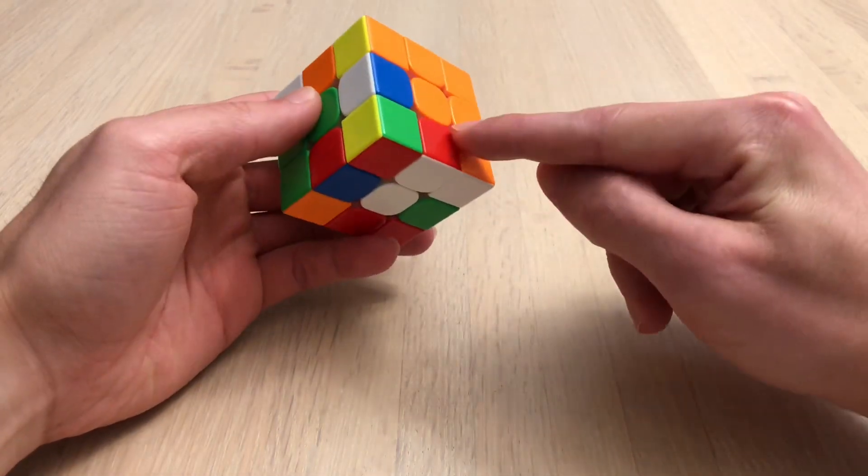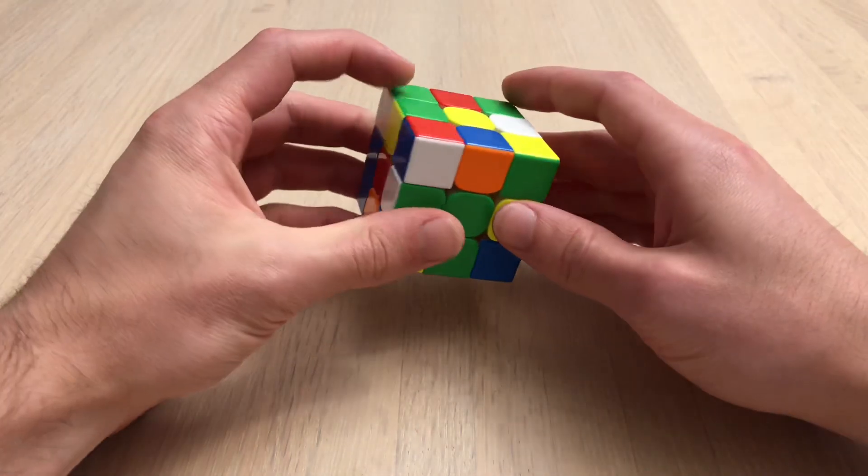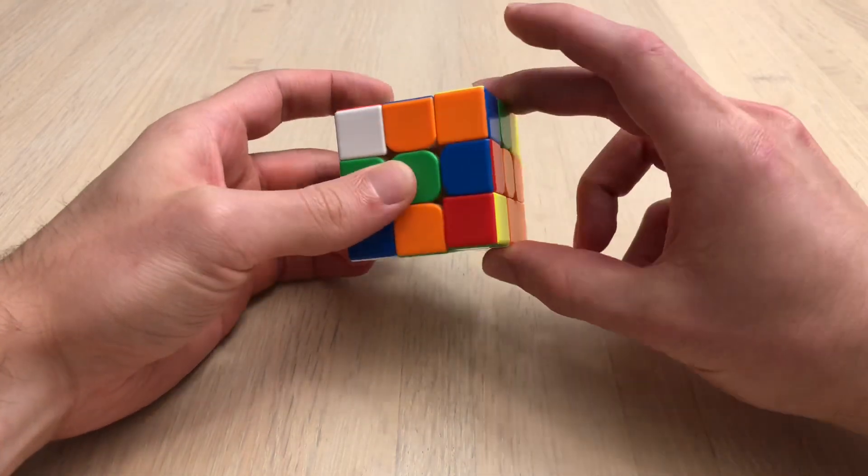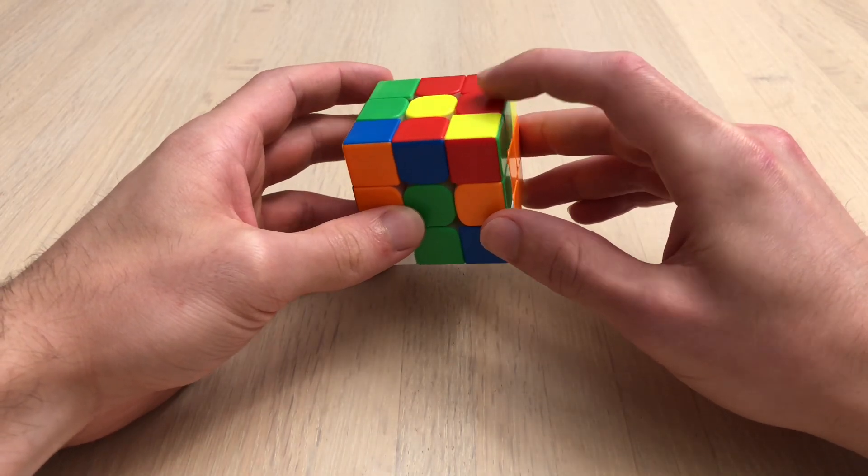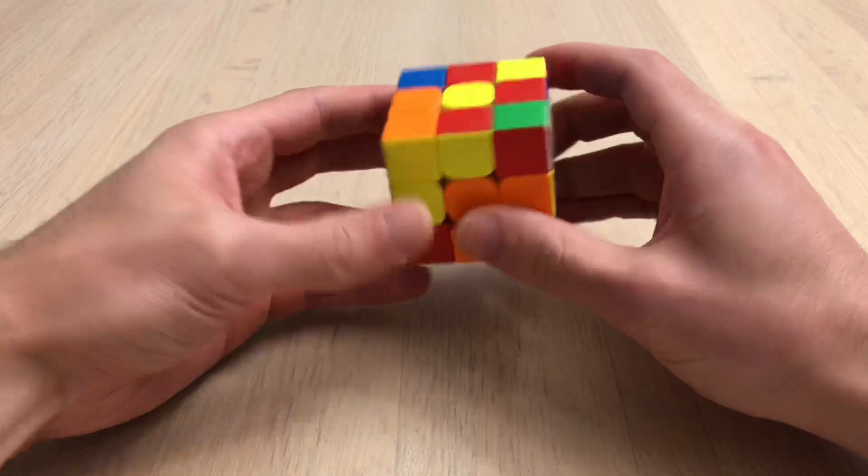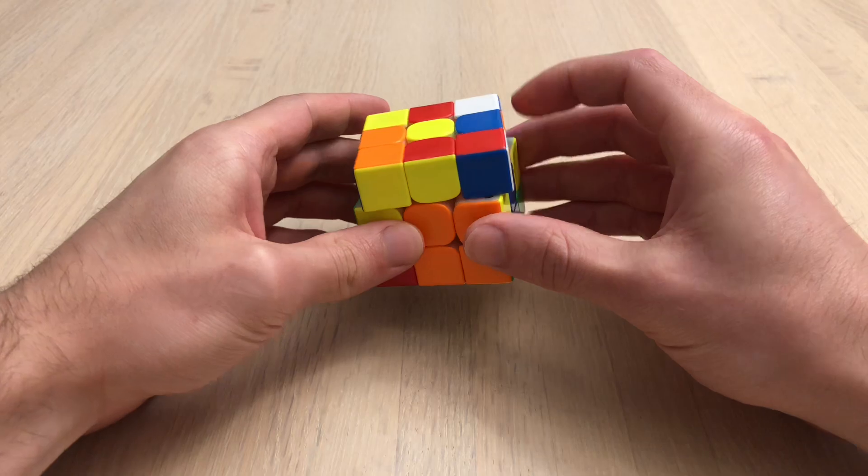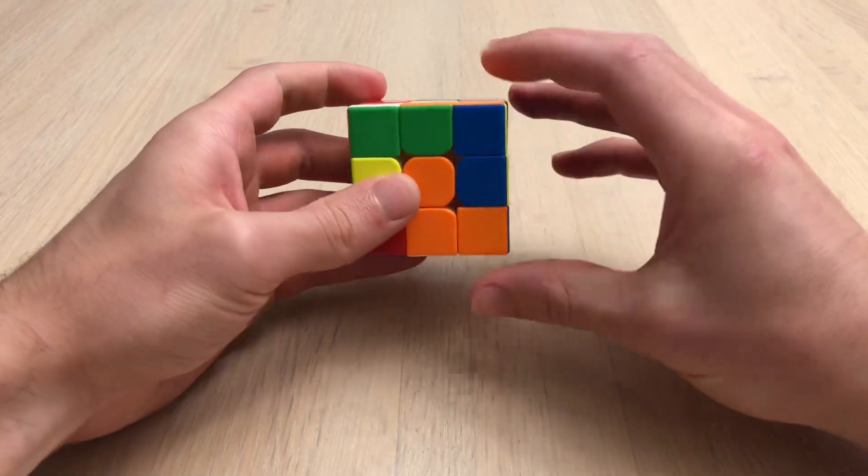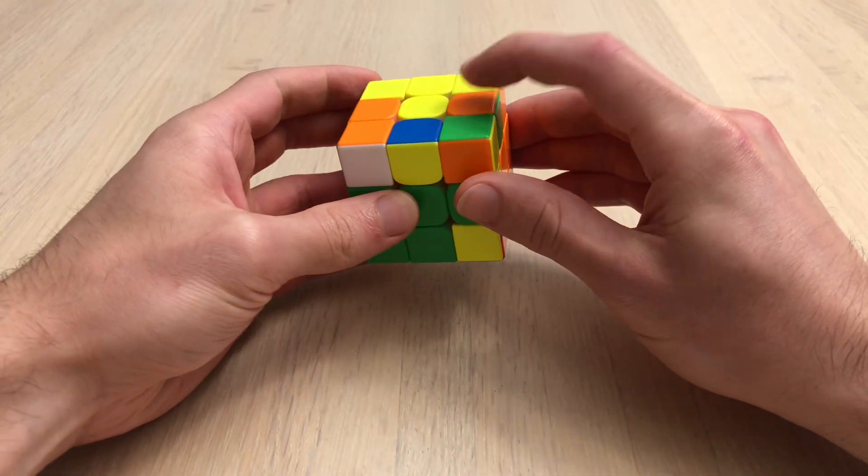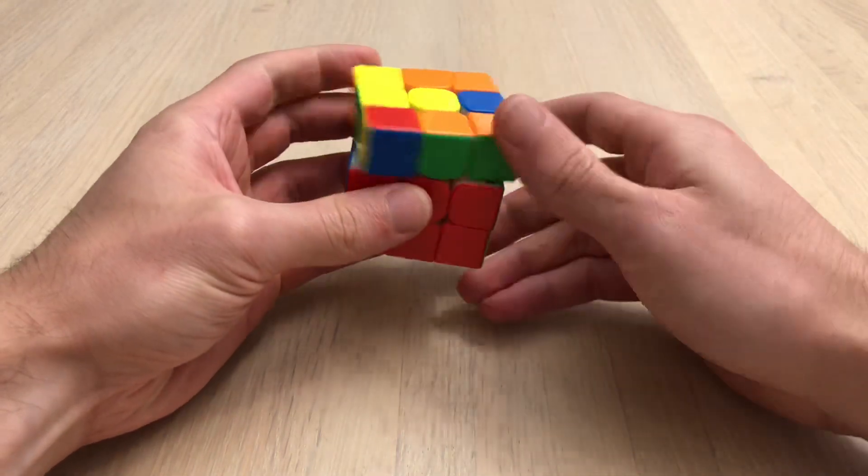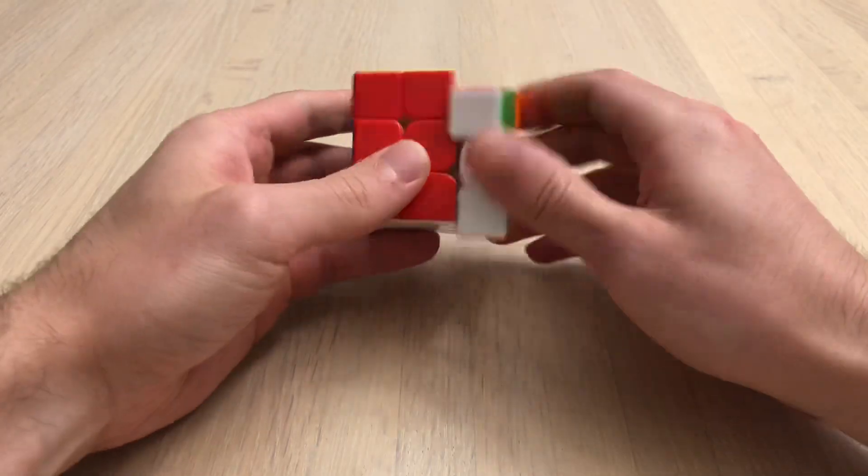So first I'm going to move this red over, blue down so that they're relatively solved, and then orange, green, and then this edge is here. So I'm going to go right into this pair and these two, these two, and finally last pair. OLL and PLL.